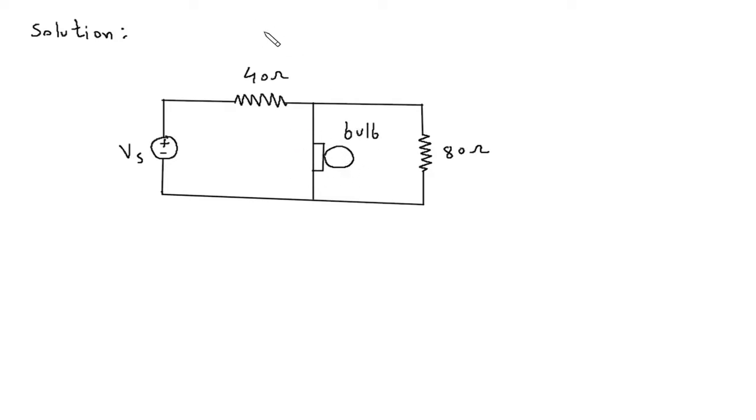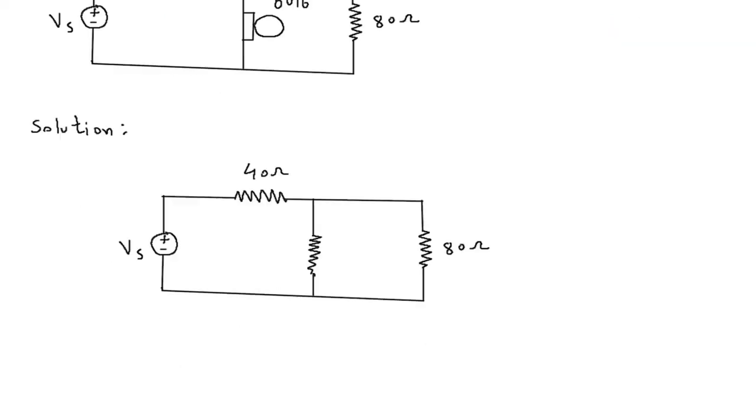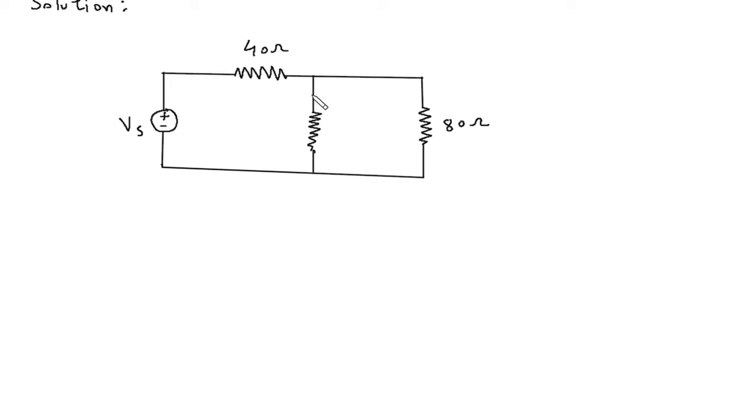So the resistance of this bulb will be 120 volt is the voltage and 0.75 ampere is the current. So this will be this R. R is equal to V by I.